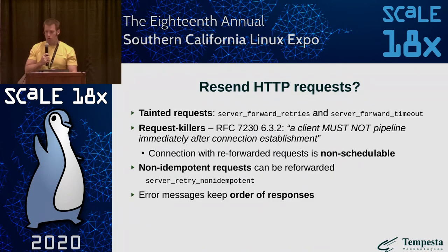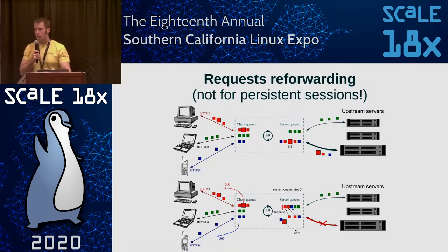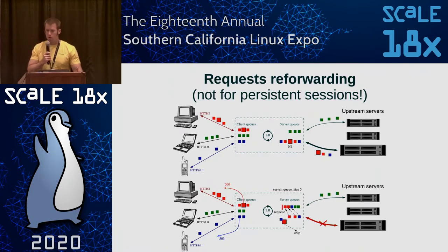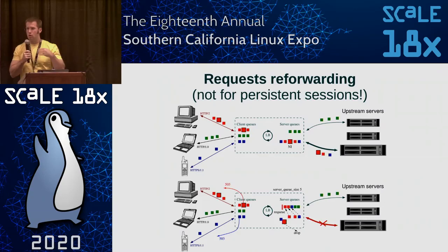While non-idempotent requests should never be forwarded, it's still possible to specify explicitly that they should be forwarded. Let's look at what happens in request distribution. We see three clients on one side. We have to maintain client queues, which are required to maintain request order and corresponding responses. When requests arrive to the proxy, we put them into client queues. Next, we execute the load balancing logic, which distributes requests among server connections.